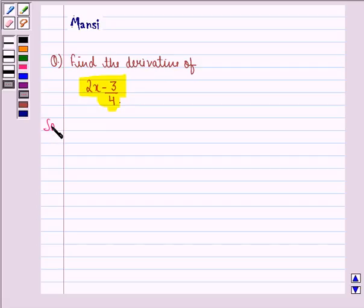Let us start with the solution to the question. Let f(x) be equal to 2x minus 3 by 4.